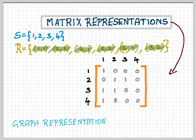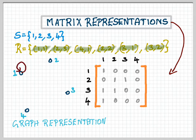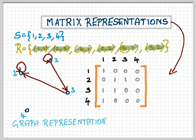A graph representation is sort of self-explanatory. I write a node for every element of S. Since S has 1, 2, 3, 4, I write four nodes labeled 1, 2, 3, and 4. Then, since (1,1) is in R, I put an arrow from 1 to 1. Since (2,2) is in R, I put an arrow from 2 to 2. Since (2,3) is in R, I put an arrow from 2 to 3, and so on.